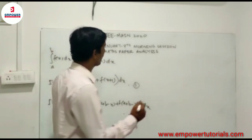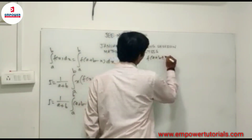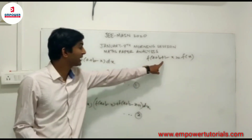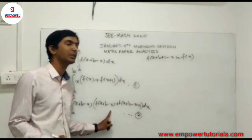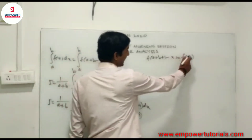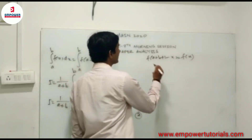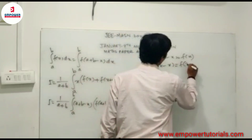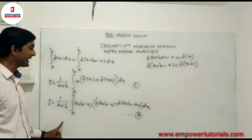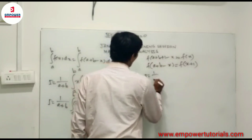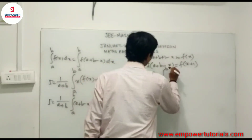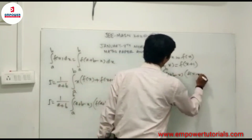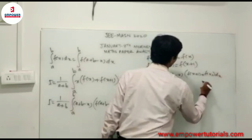The functional equation given is f(a + b + 1 - x) = f(x). So f(a + b - x + 1) gets replaced by f(x). For f(a + b - x), we replace x by x + 1 in the functional equation to get f(a + b - x) = f(x + 1). So the second integral becomes: I = 1/(a+b) times the integral from a to b of (a + b - x)·[f(x+1) + f(x)] dx. We call this the third integral.